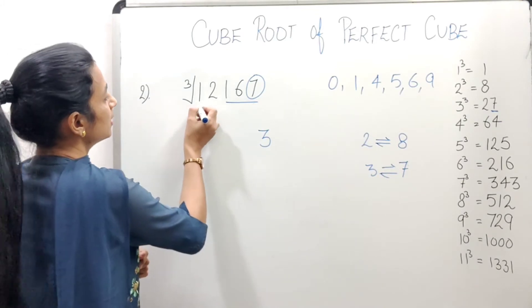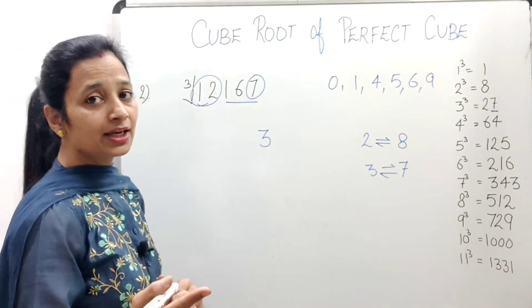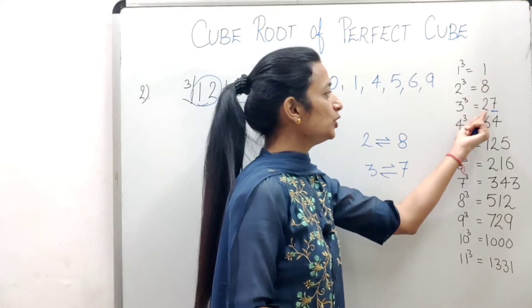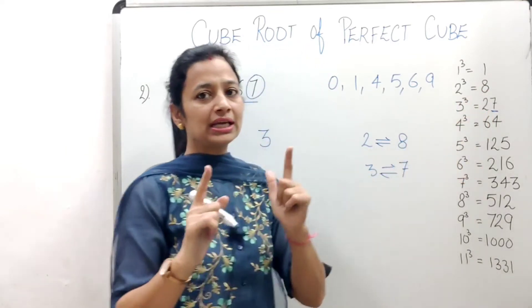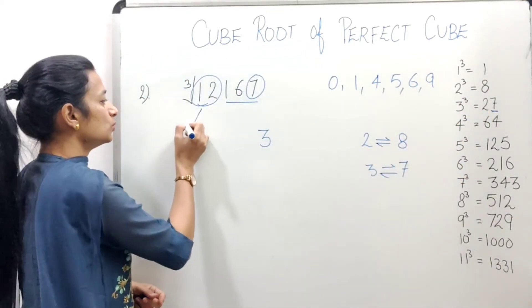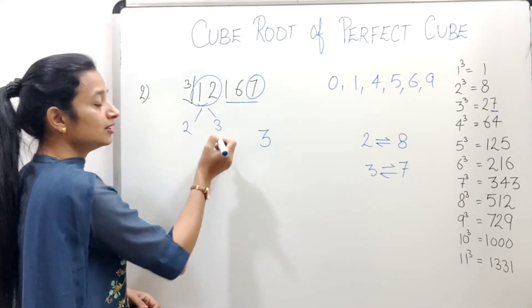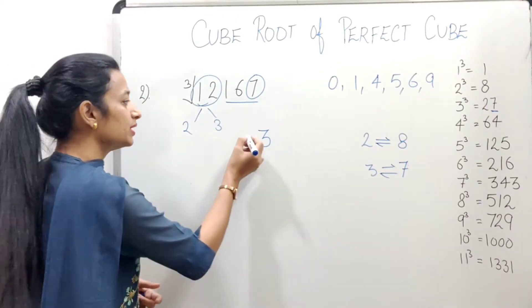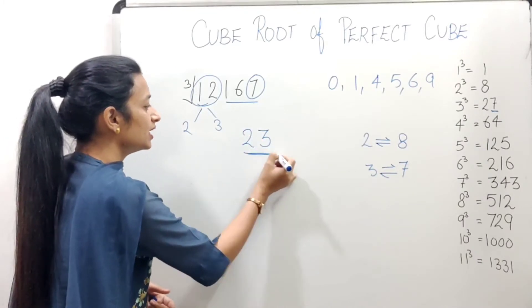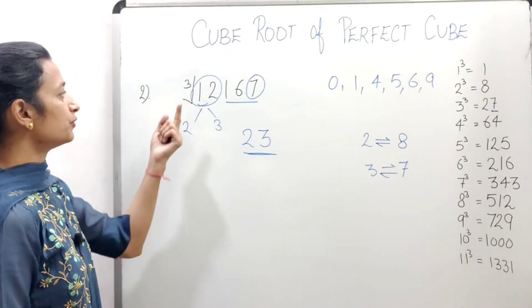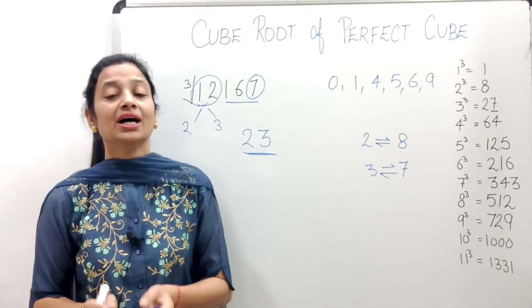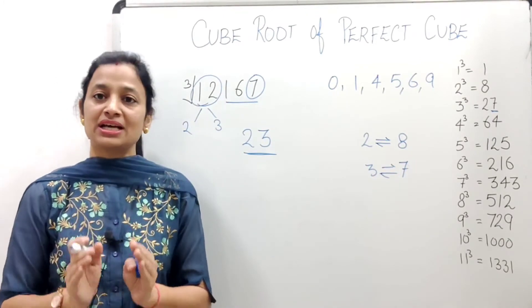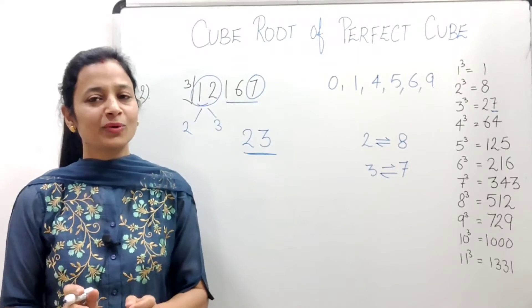And now, we will look at 12. So 12 comes between whose cubes? Look, between 8 and 27, means between 2 and 3's cubes. And among these two, we have to take the smaller number. So 23 is the cube root of 12167. I hope the trick steps are clear to you.